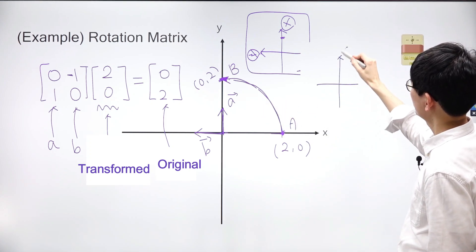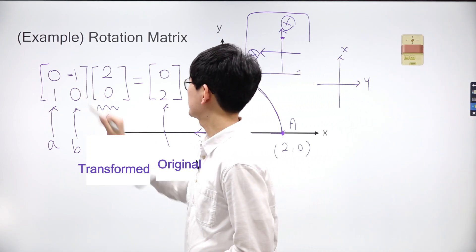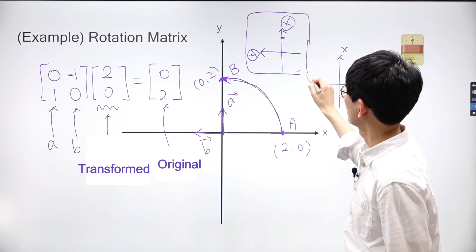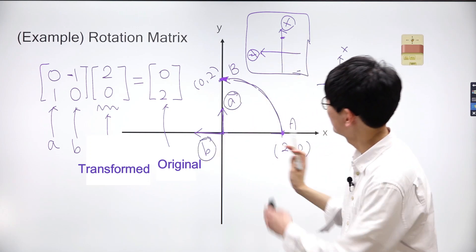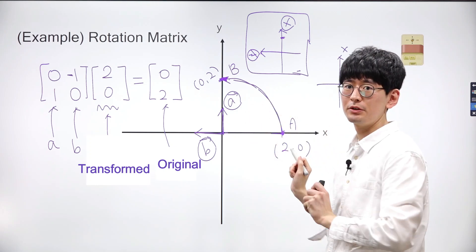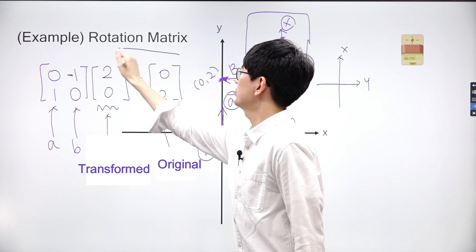Given that vectors within a matrix are treated as the new axes of a two-dimensional plane, the matrix comprised of these two vectors A and B rotates the coordinate space or plane by 90 degrees counterclockwise. This matrix is commonly referred to as a rotation matrix.